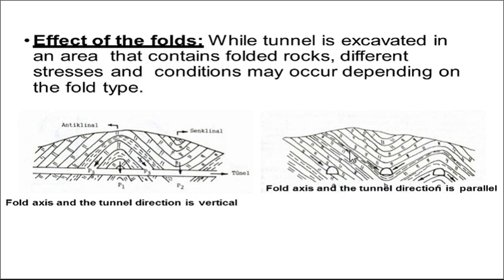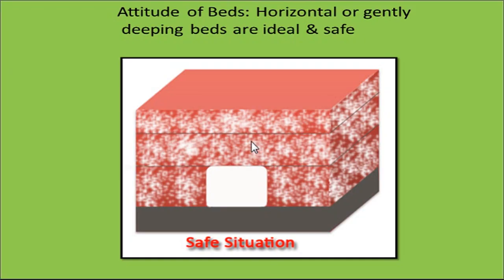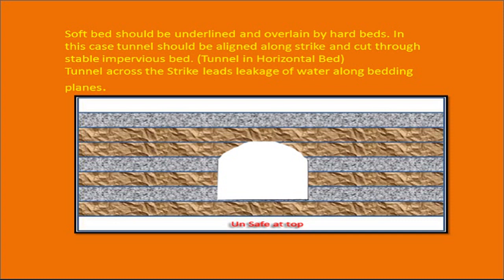As far as the tunnel excavated through the synclinal portion — there is a problem. The tunnel excavated through the trough of a fold would be exposed to overpressure from both limbs, and accumulation of water there would increase the danger of seepage or infestation. Regarding the attitude of beds, horizontal or gently dipping beds are ideal and safe for tunnel excavation. Soft beds should be underlain and overlain by hard beds — alternate beds of soft and hard rock represent a safe condition. The tunnel across the strike leads to leakage of water along the bedding plane.